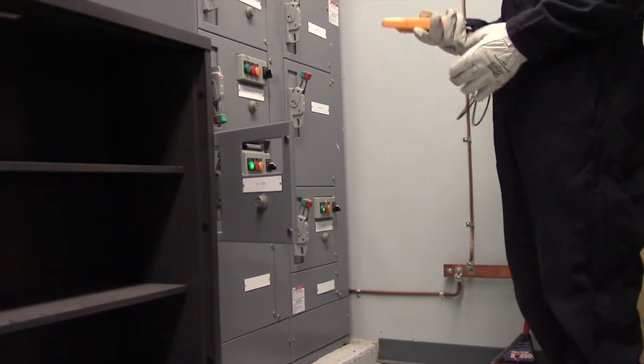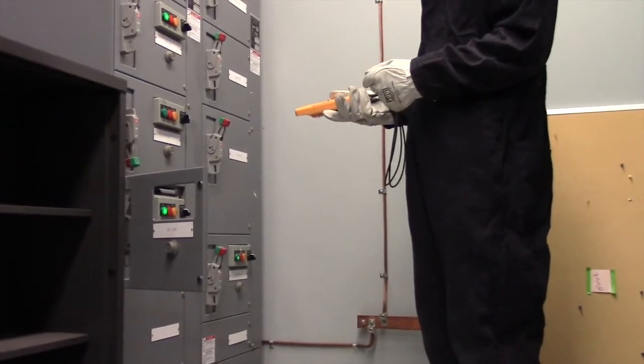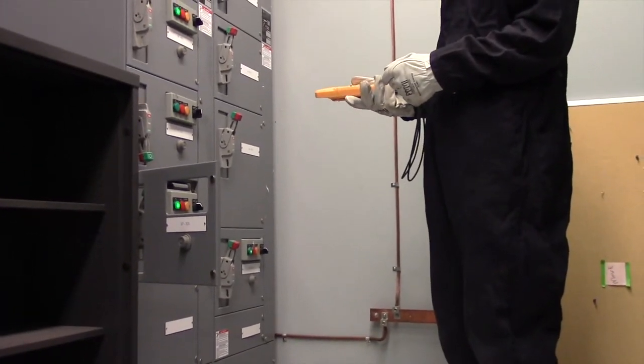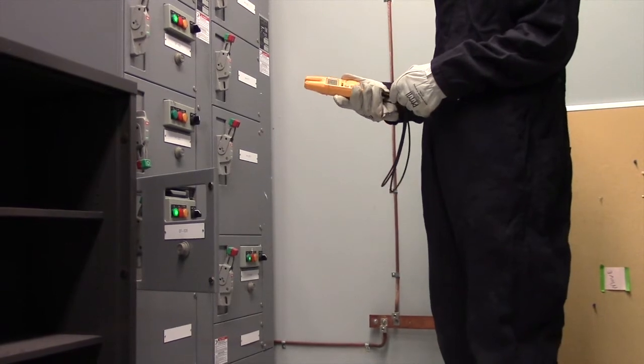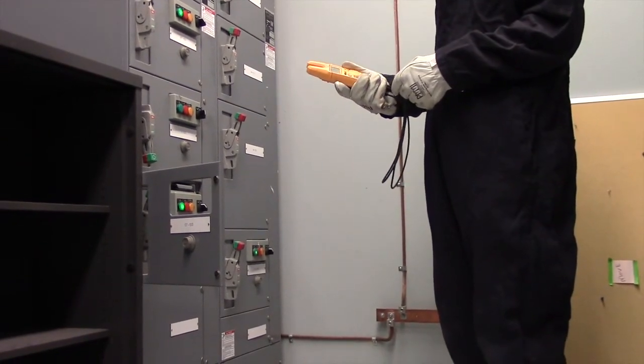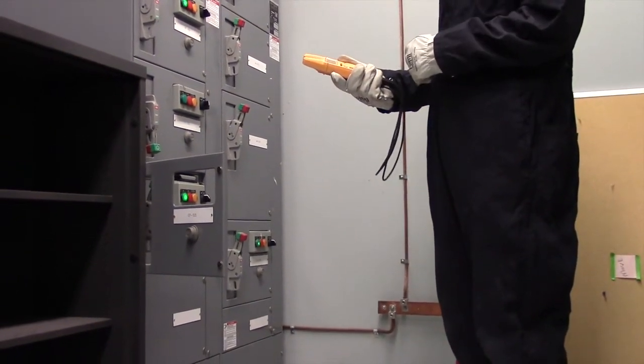Here we have an exhaust fan running on the roof. We're going to confirm the three phases are all running the same current and check the voltage at the same time.